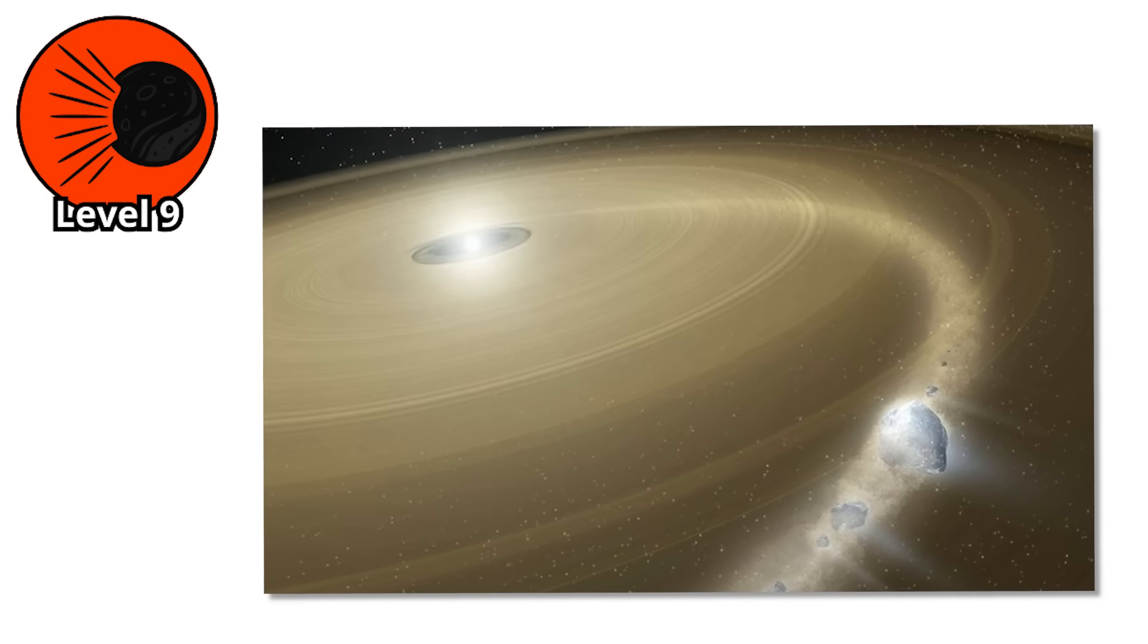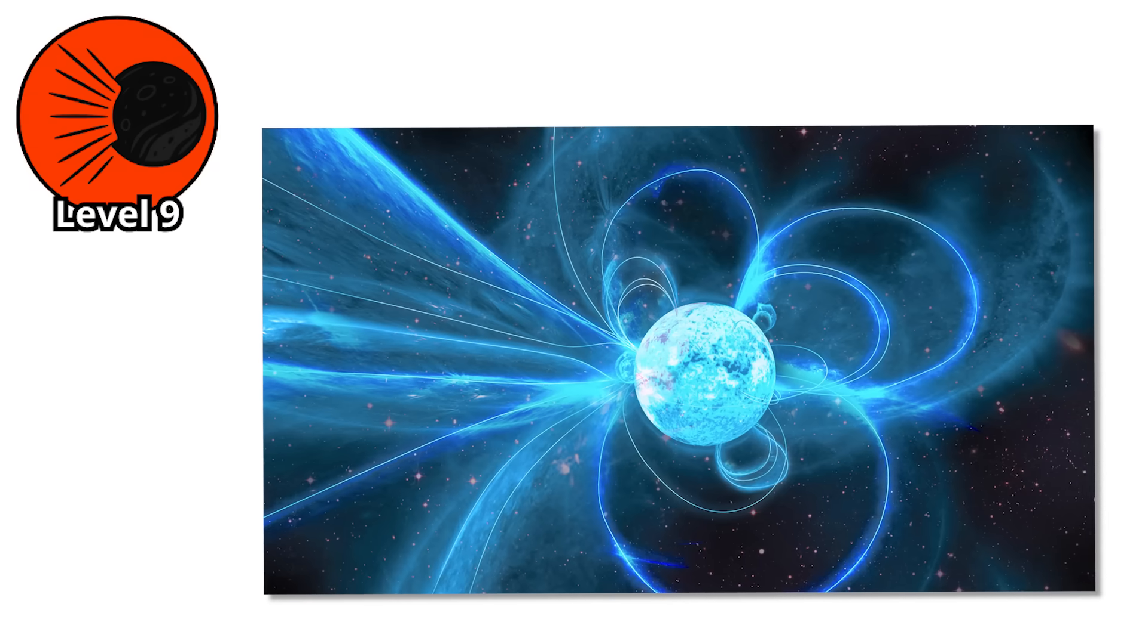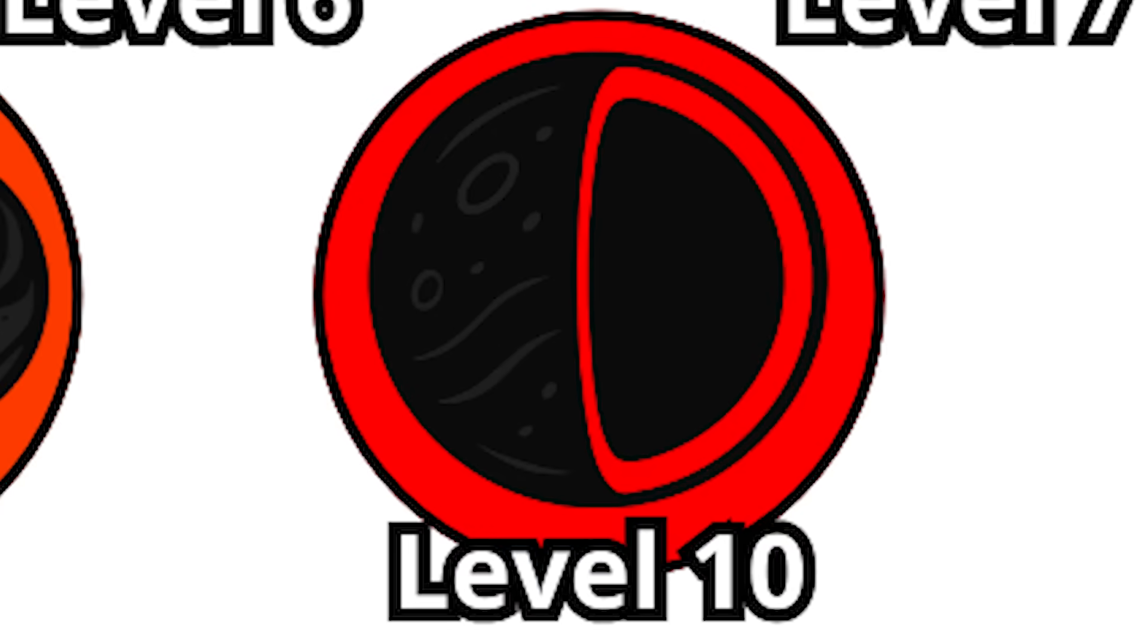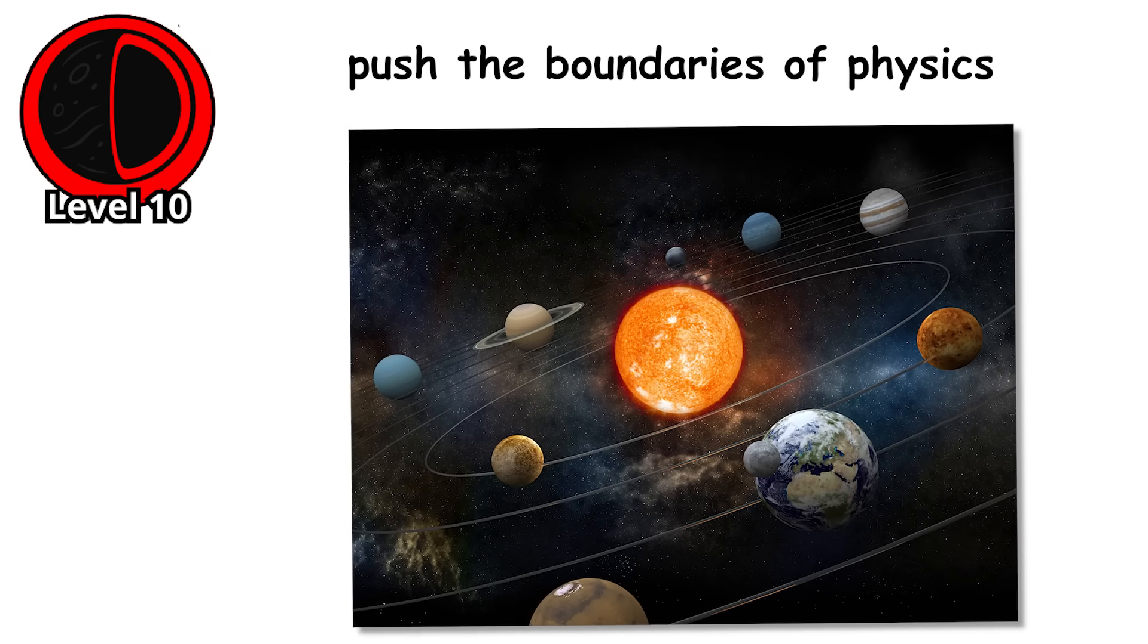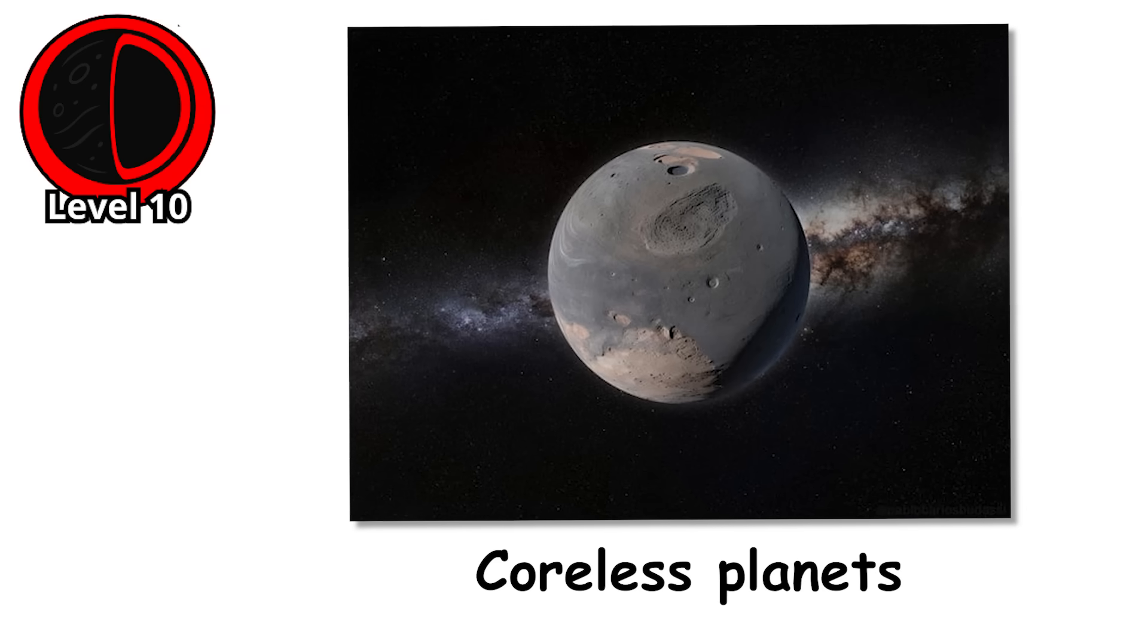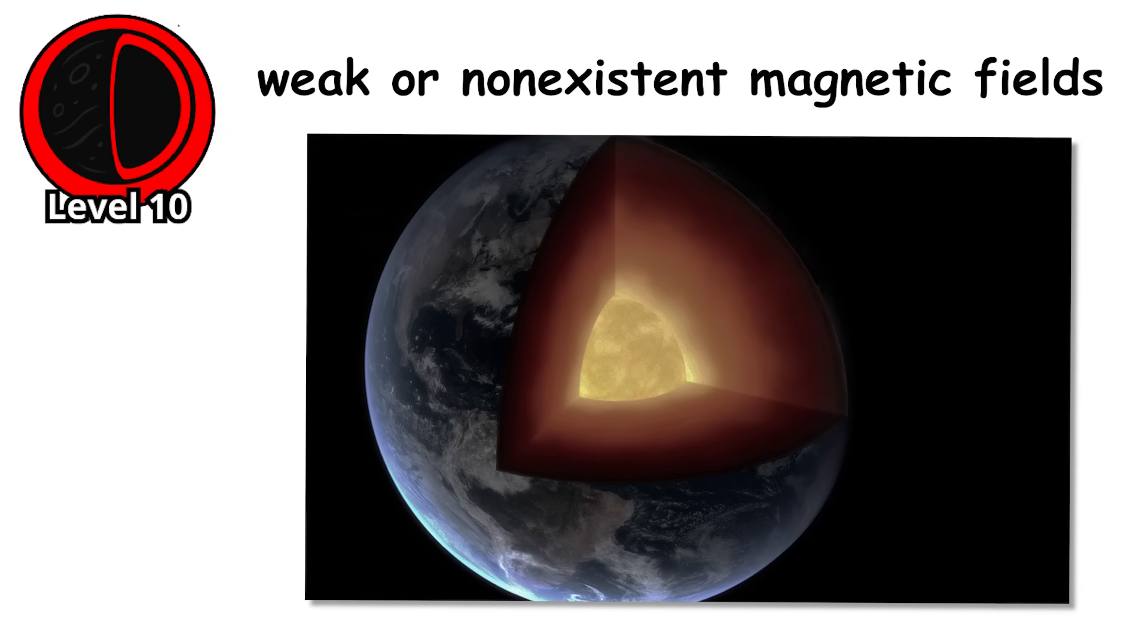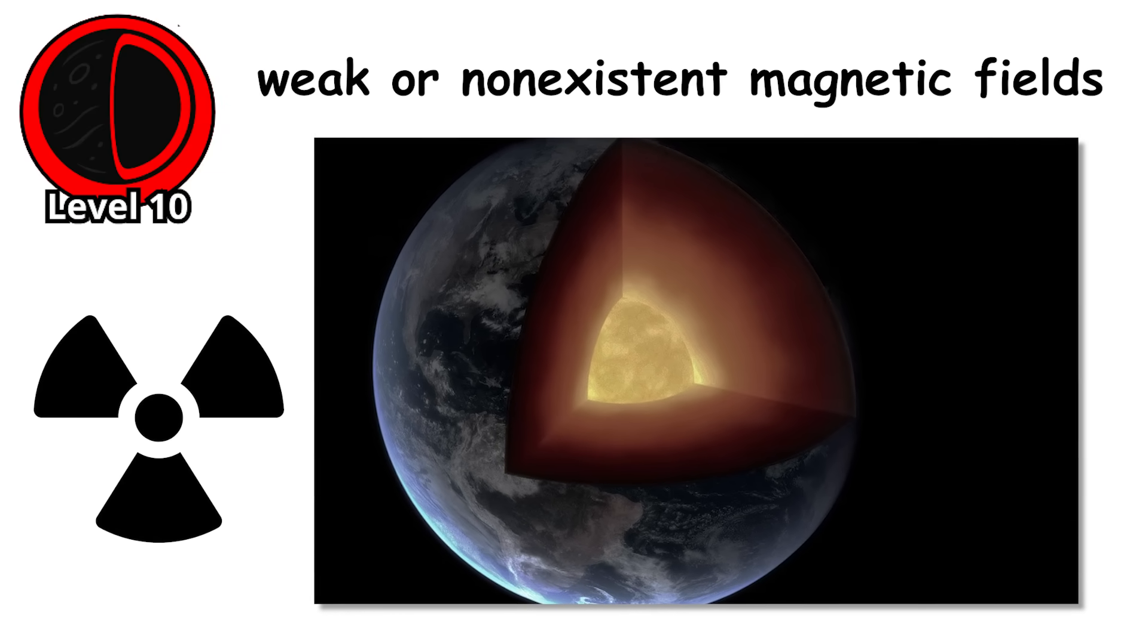You think orbiting a dead star is extreme? We're about to enter territory where the laws of physics themselves start to bend, planets so strange they shouldn't be possible at all. Level 10. Now we venture into the realm of planets that push the boundaries of physics into territories that seem like science fiction. Coreless planets - planets with no metallic core at all, just layers of ice and rock all the way through. These would have weak or non-existent magnetic fields, leaving them vulnerable to stellar radiation stripping away their atmospheres.